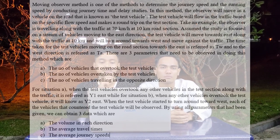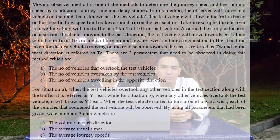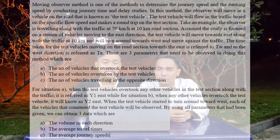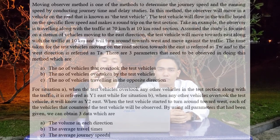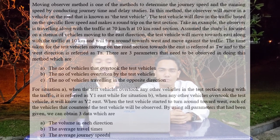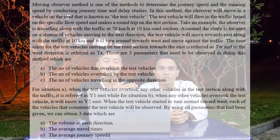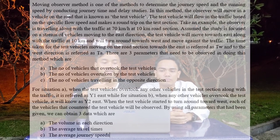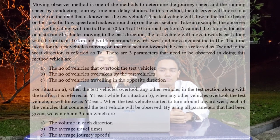Take an example. The observer is traveling along with the traffic at 80 km per hour on a 10 km road section. Assume the study is focused on a street of vehicles moving to the east direction. The test vehicle will move towards east along with the traffic at 10 km, and it will turn around towards west and against traffic.